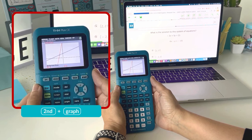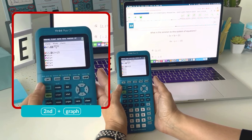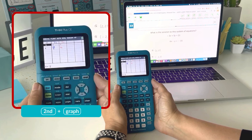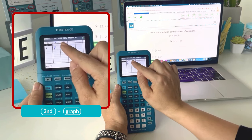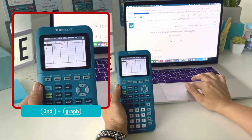Or I can look at the solution of these on a table by choosing second graph and finding where the y coordinates are the same, which is negative 2, 3, and option B.